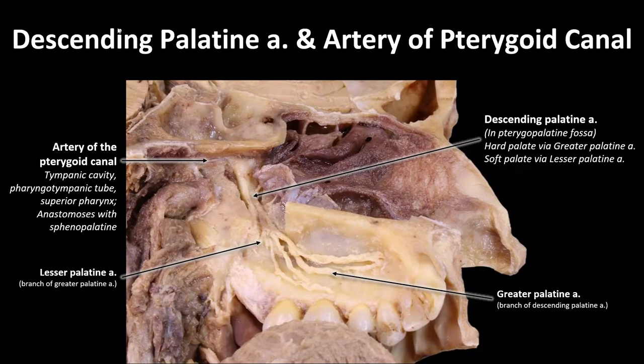Starting with the artery of the pterygoid canal, which is this small little branch right here — it's going to travel with the nerve of the pterygoid canal through the pterygoid canal, very appropriately named. From there, it is going to supply the tympanic cavity, or the middle ear, the pharyngotympanic tube, and parts of the superior pharynx. As it does so, it's going to have some pretty extensive anastomoses with the sphenopalatine artery.